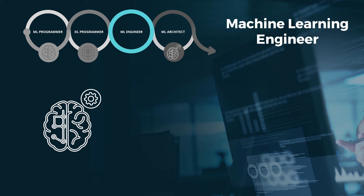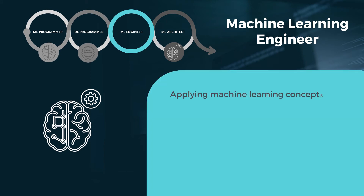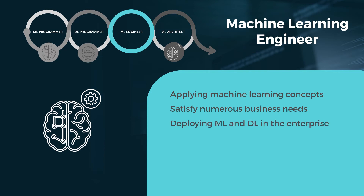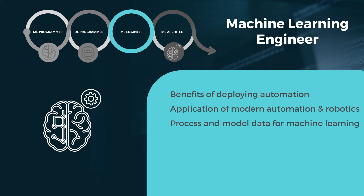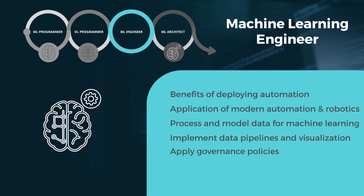The third step in becoming a machine learning architect is the machine learning engineer role, which deals with applying machine learning concepts to satisfy numerous business needs. They are actively involved with deploying machine learning and deep learning in the enterprise. The training in this track covers the benefits of deploying automation in design and development, the application of modern automation and robotics, processing and modeling data for machine learning, implementing data pipelines and visualization, applying governance policies, and mitigating risks for machine learning implementation.